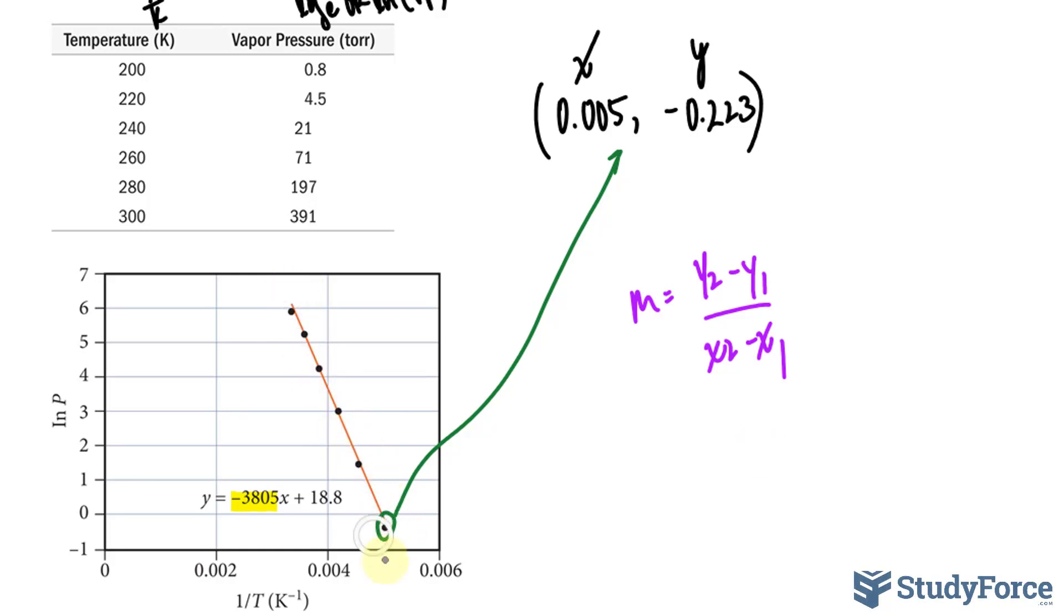And as mentioned earlier, the slope is the most important part because it actually relates the heat of vaporization and the gas constant, which you can use to find the heat of vaporization.